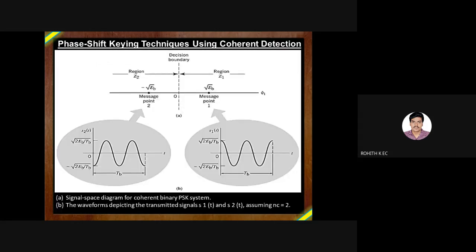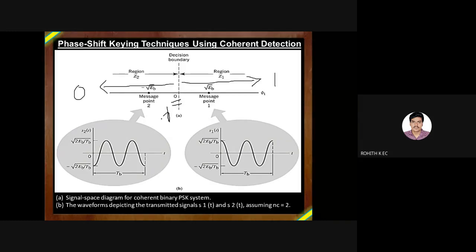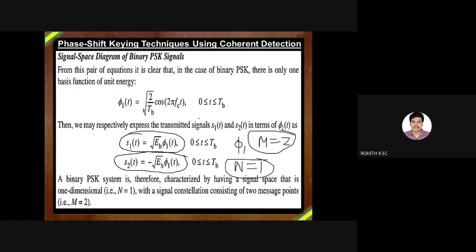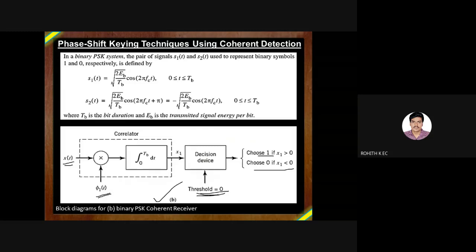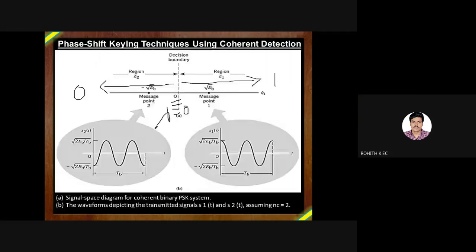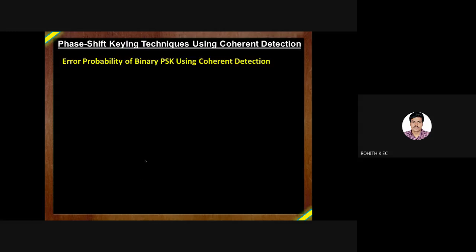Since we have two symbols, only one decision boundary is needed at threshold zero. Any signal amplitude greater than zero is assigned logic 1; less than zero is assigned logic 0. The signal-space diagram of the coherent BPSK system shows logic 1 as a positive amplitude signal and logic 0 as a negative amplitude signal along the φ₁ axis.